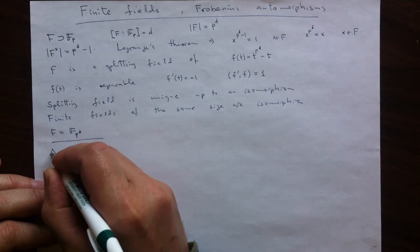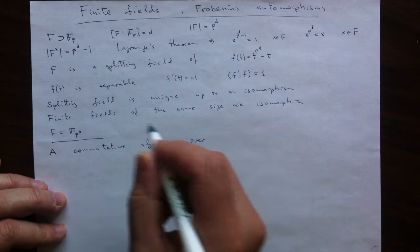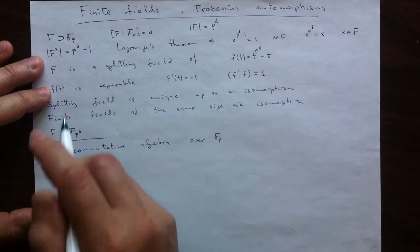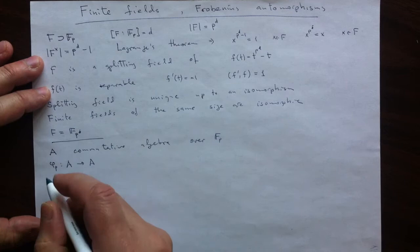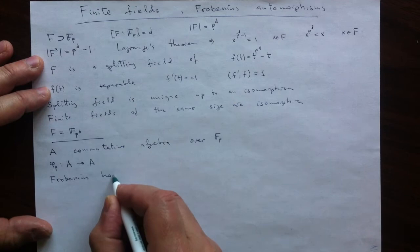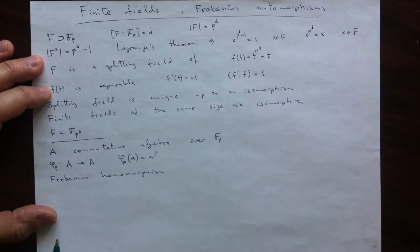Let's look at the symmetries. I will start in a slightly more general context. I will start with a commutative algebra over the same prime field, over the field of p elements. Basically dropping the invertibility for the beginning of the story. I will define a certain homomorphism from A into itself, which will be called the Frobenius. It is defined by a simple formula. Any element is raised to the pth power.